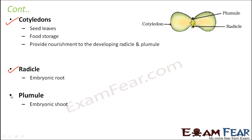So these are the different parts of a dicotyledonous seed. Outside you have a seed coat made up of two layers — testa and tegmen. You also have a small scar-like structure called hilum, which shows where the seed was attached to the fruit. Just above that is a small pore called micropyle. Inside you have an embryo made up of two cotyledons, one plumule, and one radicle.